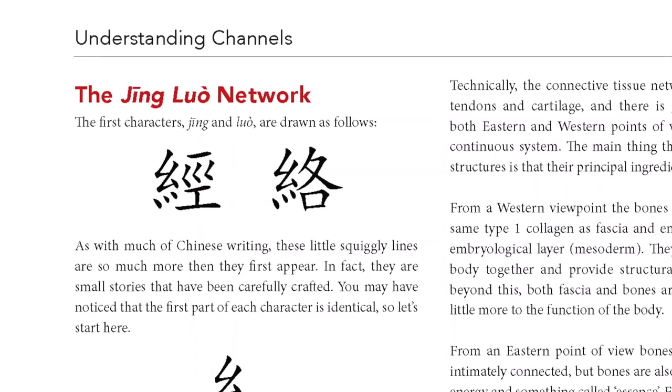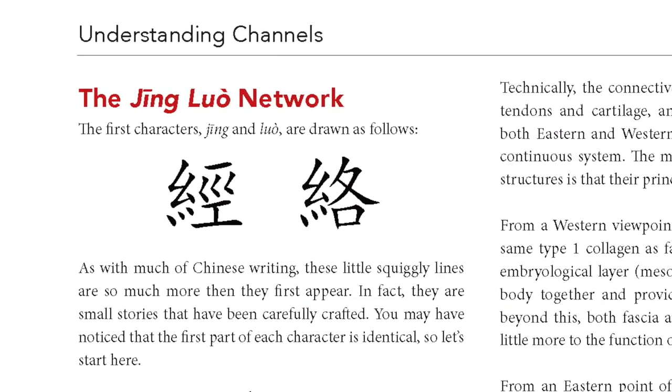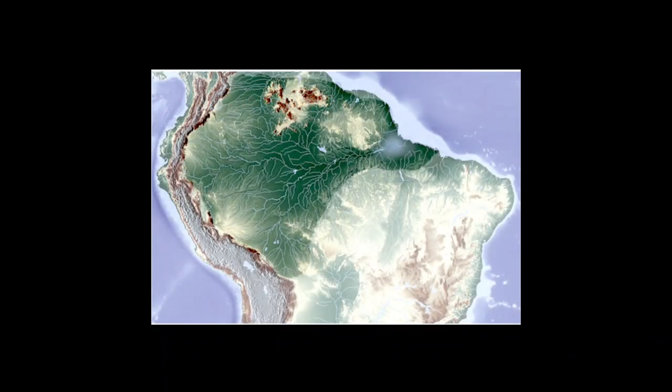Qi flows within the channel system, what is described as the Zhuang Lua. The ancient Chinese described how Qi flow was like water, and this analogy also works for electricity.